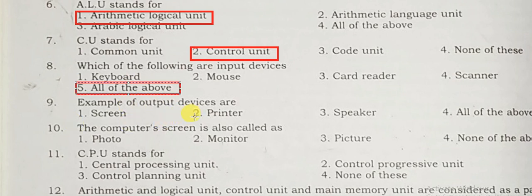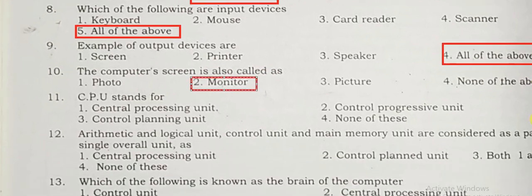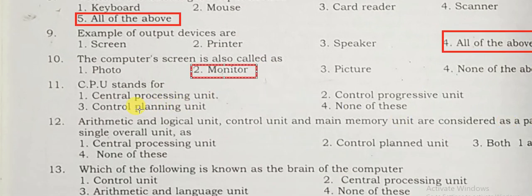Examples of output devices are computer screen, printer, speaker — all the above. The computer screen is also called as monitor. CPU stands for central processing unit.